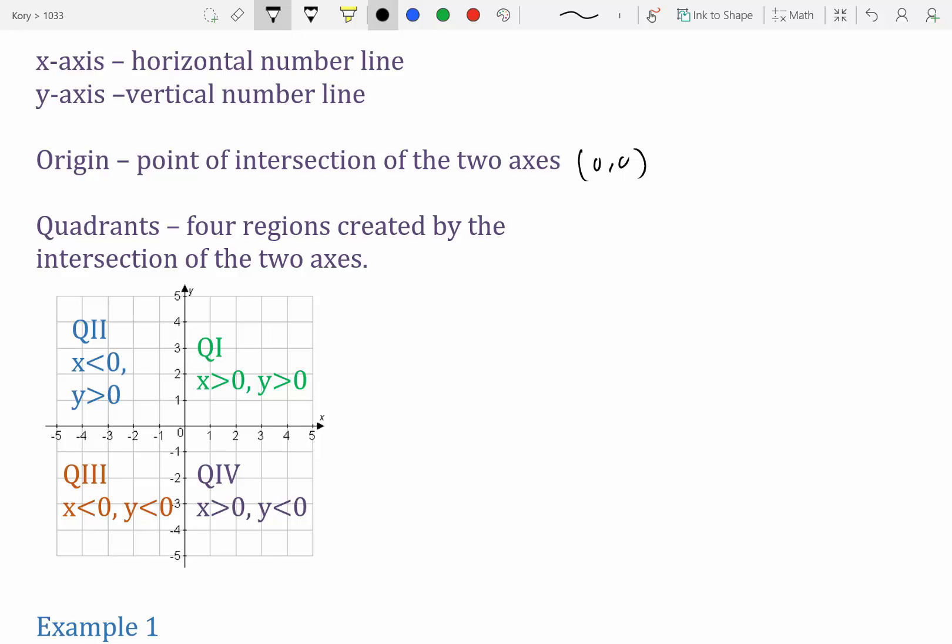Quadrant 1, x and y are positive. Quadrant 2, x is negative, y is positive. Quadrant 3, both x and y are negative. And quadrant 4, x is positive and y is negative.